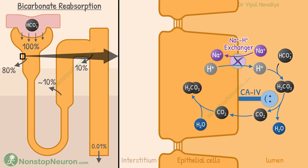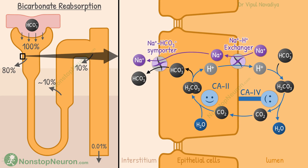Inside the cell, CO2 reacts with a water molecule and forms carbonic acid. This reaction is also slow, and is catalyzed by a different enzyme called carbonic anhydrase 2. Upon being formed, the carbonic acid undergoes spontaneous dissociation into bicarbonate and hydrogen. Then bicarbonate exits the cell by the sodium-bicarbonate cotransporter. Hydrogen is again secreted into the tubule, and the entire process is repeated.